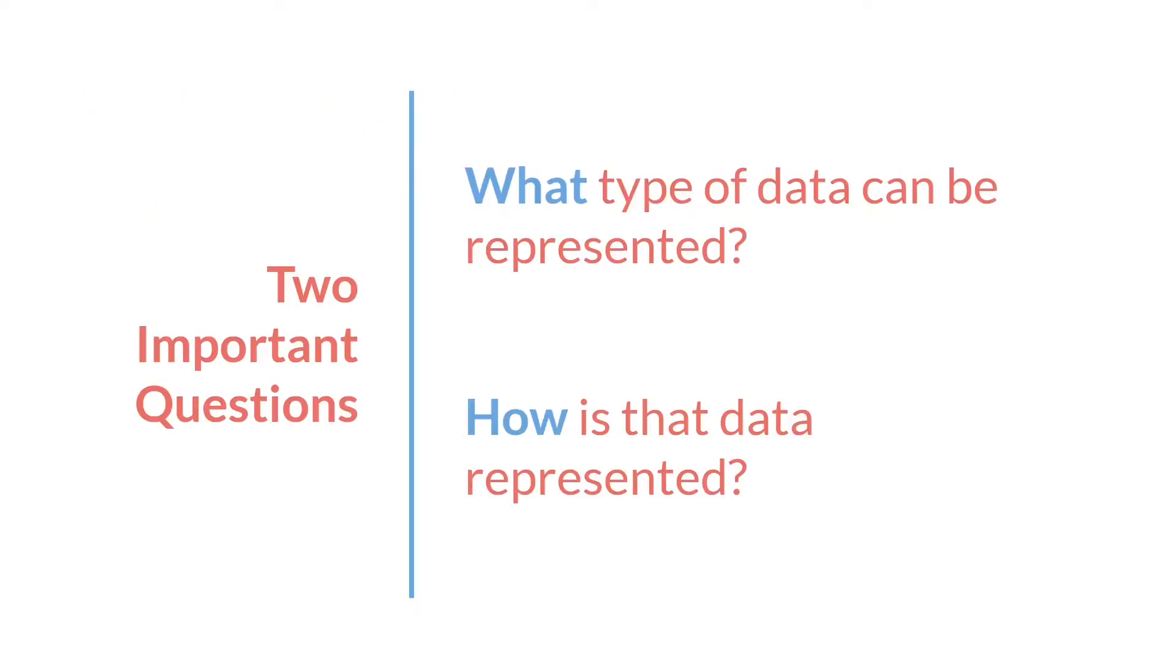So this leads us to two important questions. The first question is, what type of data can be represented in a JSON file? And the second question is, how is that data represented?